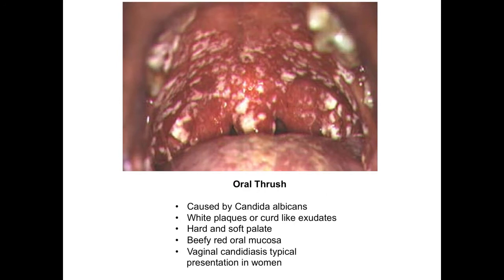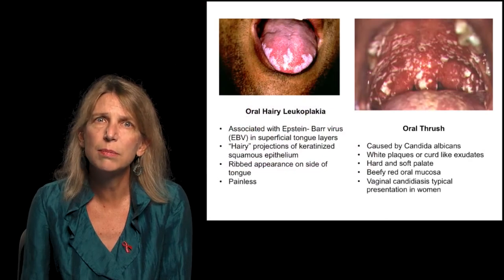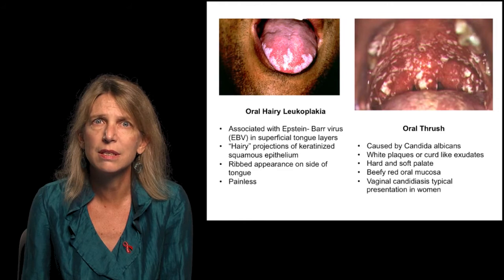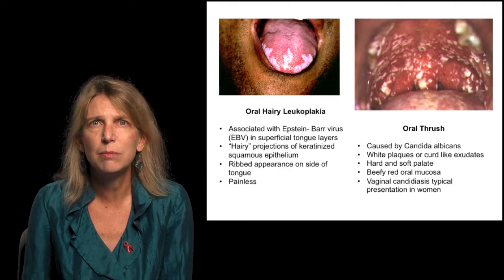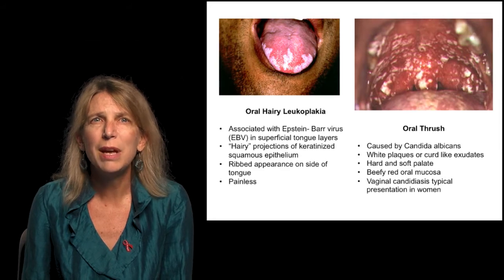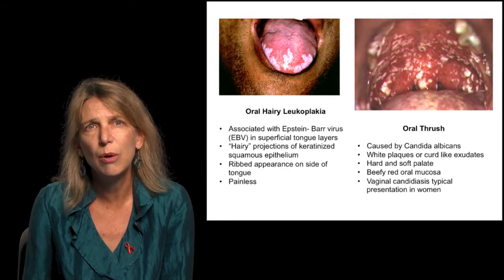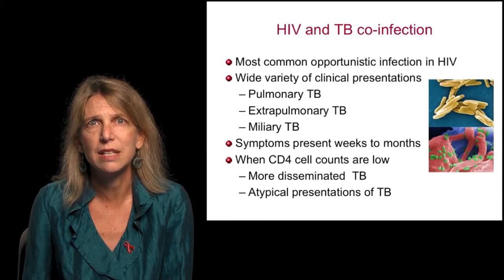Another characteristic mucocutaneous finding during this phase is oral thrush. It is caused by Candida albicans and presents as white plaques or curd-like exudates. It can be seen in the hard and soft palate. Patients can also experience beefy red oral mucositis. In women, vaginal candidiasis is a typical presentation. Patients presenting with any of these findings should always be offered HIV testing.